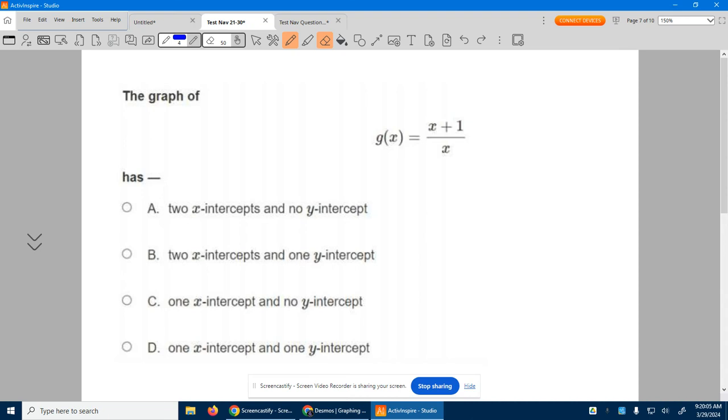All right, the graph of g of x equals x plus 1 over x has two x-intercepts and no y-intercept.